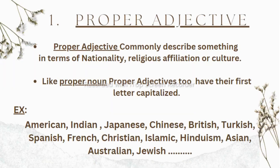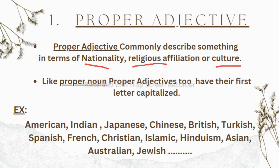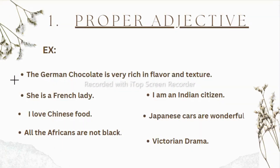Let's see each one in detail. The first type is proper adjective. Proper adjectives are derived from proper nouns. Proper nouns are words which show a particular name of a person, place, or thing. These adjectives commonly describe something in terms of nationality, religious affiliation, or culture. Like proper nouns, proper adjectives also have their first letter capitalized — for example: American, Indian, Japanese, Chinese, British, Turkish, Spanish, Australian, Christian, Islamic, and Asian.